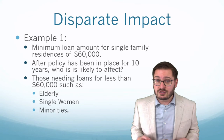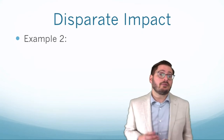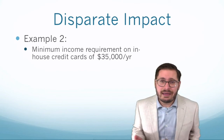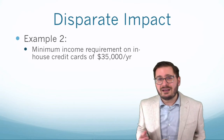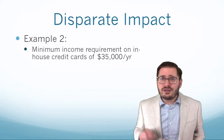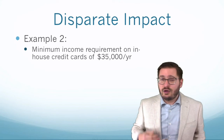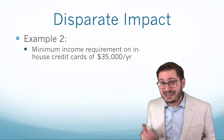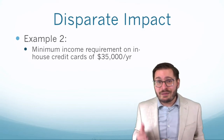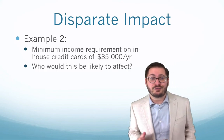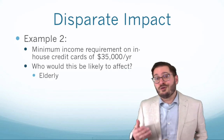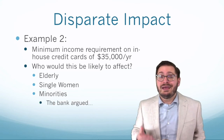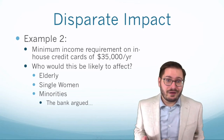So minimum loan amounts are a potential problem for disparate impact. Another potential problem for disparate impact — the second example — would be a minimum income requirement. I went into a bank one time where I saw a minimum income requirement on a credit card product of about $35,000 per year. They only took applicants of individuals — they did not take joint applicants. So any individual applicant wanting a credit card had to have a minimum income of $35,000. Who would this likely affect? It could potentially affect the elderly, single women, minorities, and probably bank employees — even the tellers.